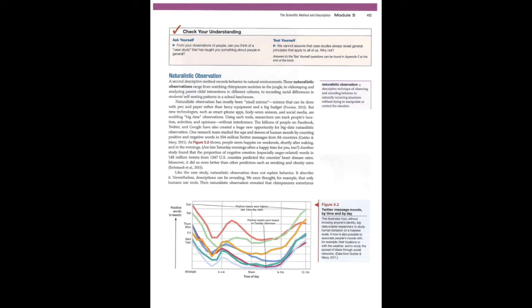One research team studied the ups and downs of human moods by counting positive and negative words in 504 million Twitter messages from 84 countries. As figure 5.2 shows, people seem happier on weekends, shortly after waking, and in the evenings. Are late Saturday evenings often a happy time for you too? Another study found that the proportion of negative emotion, usually anger-related words, in 148 million tweets from 1,347 U.S. counties predicted the county's heart disease rates. Moreover, it did so even better than other predictors such as smoking and obesity rates.